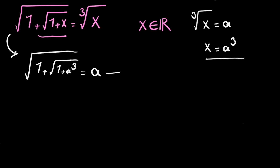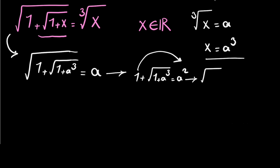If we square both sides, on the left side we can write 1 plus square root of 1 plus a cubed, that's equal to a squared. If we move 1 to the right side, we can write square root of 1 plus a cubed equals a squared minus 1.